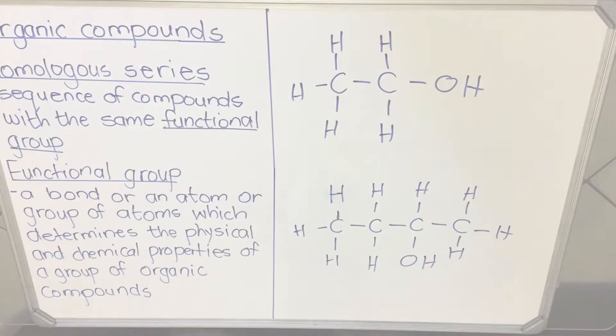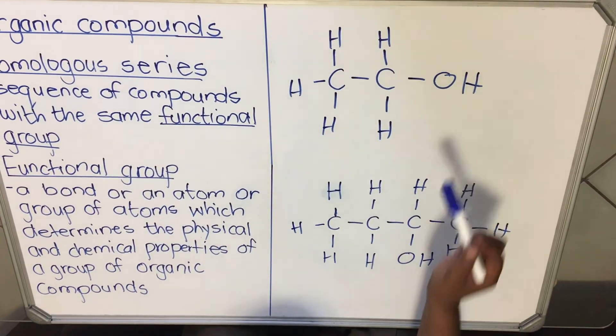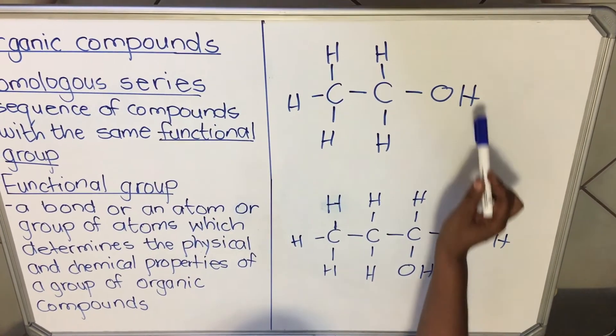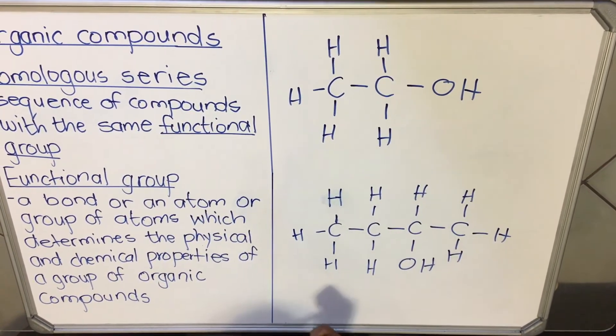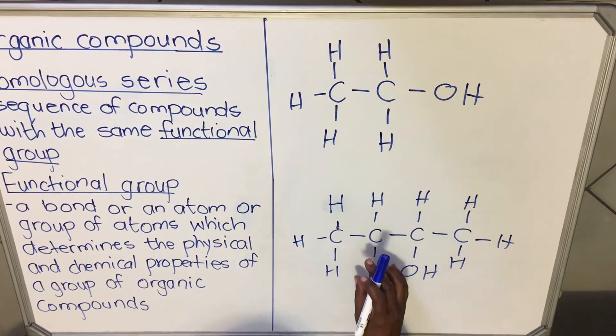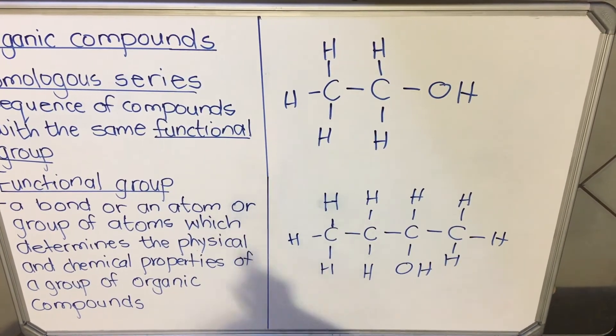Let's look at another example. Do you see you have this OH in this compound? Also you have the OH. So this is the functional group. It's a hydroxyl ion. The name is the hydroxyl and the OH is the hydroxyl ion, so it's the functional group. It makes these two compounds belong to the same homologous series.